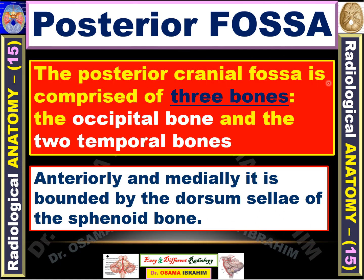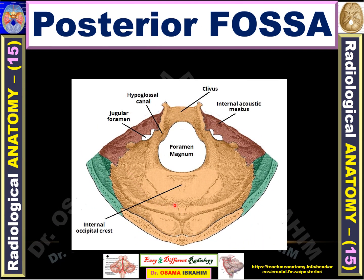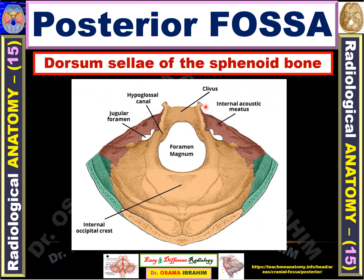The posterior cranial fossa is comprised of three bones: the occipital bone posteriorly and the temporal bones on both sides. Anteriorly and medially, it is bounded by the dorsum sellae of the sphenoid bone. The diagram shows the occipital bone posteriorly and temporal bone laterally, with the dorsum sellae as the most anterior and superior structure, forming the boundaries anteriorly and medially of the posterior fossa.